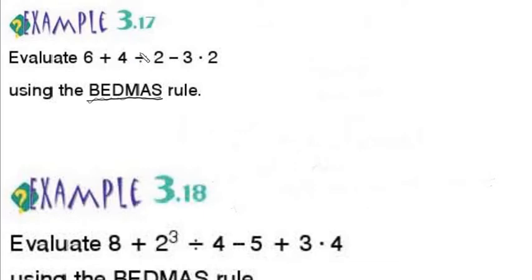In this example we have addition and we have division. Going from left to right, which one is first? Division — according to the BADMAS rule, division takes priority over addition.